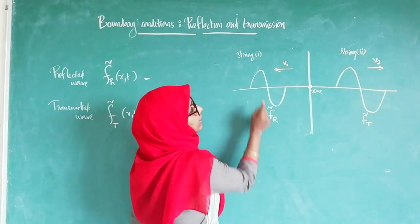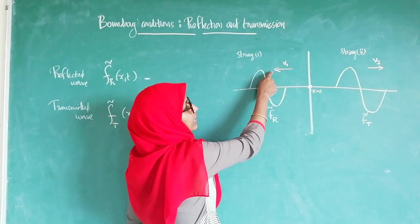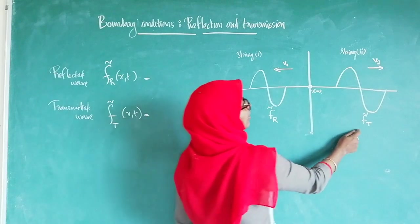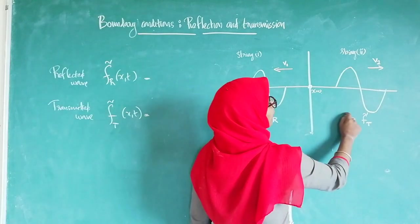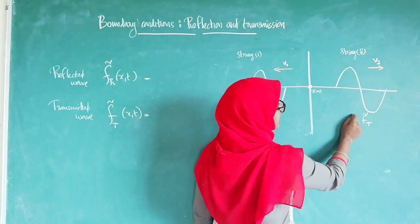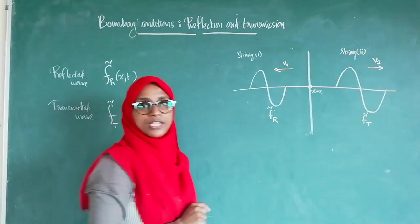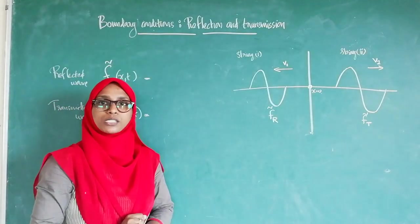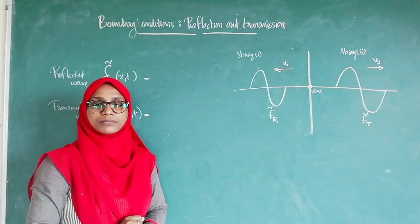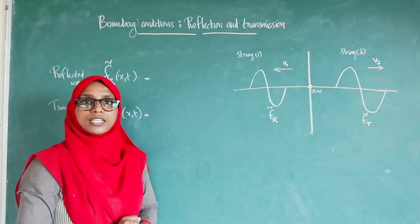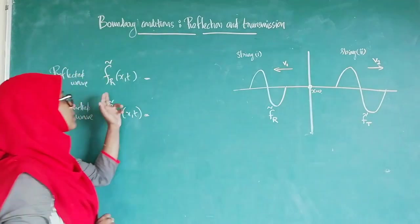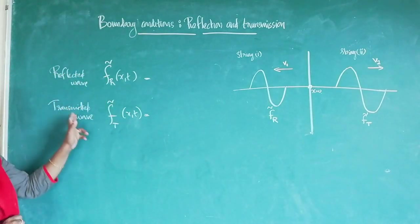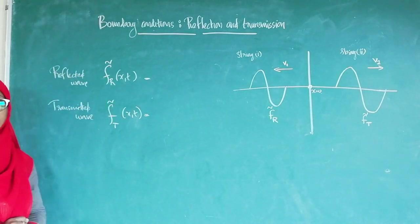F_R is travelling in the negative X direction with velocity V1 along string 1, and F_T is travelling with velocity V2 along string 2. Now we can write out the expressions for the reflected wave and the transmitted wave.